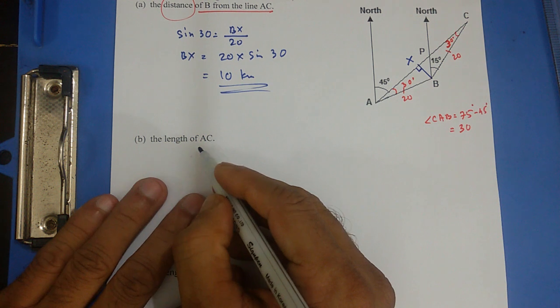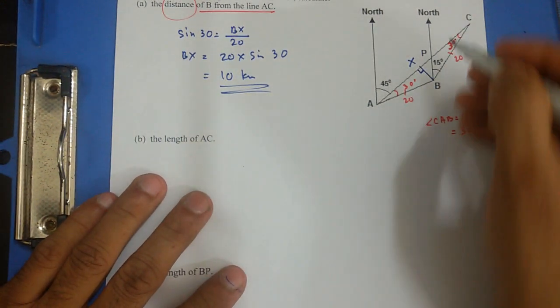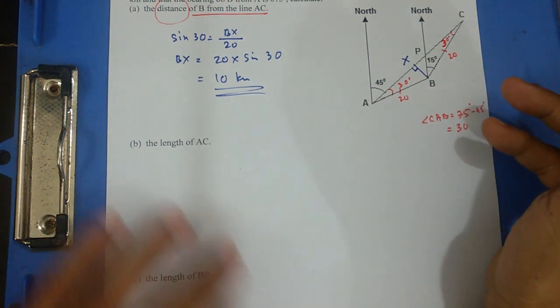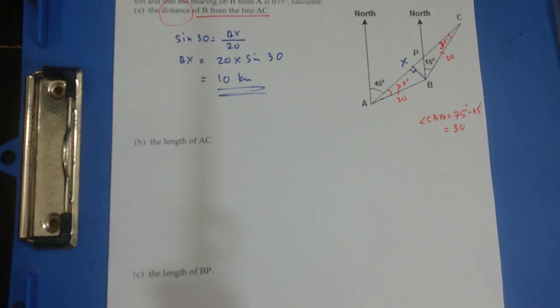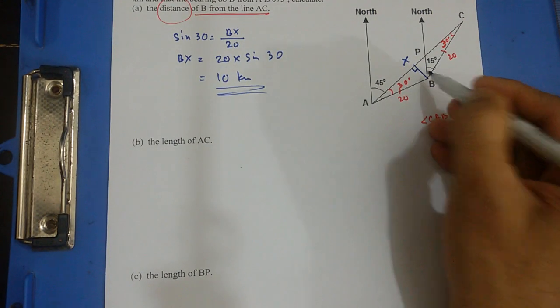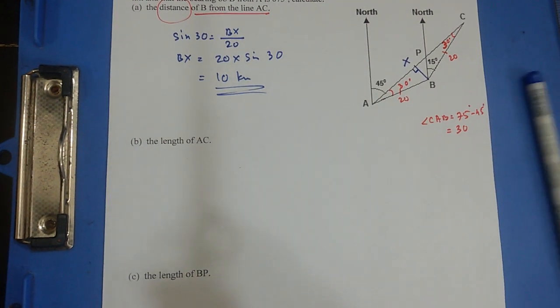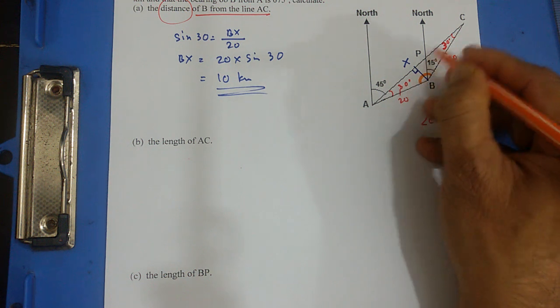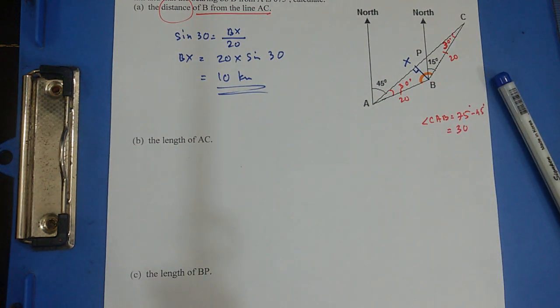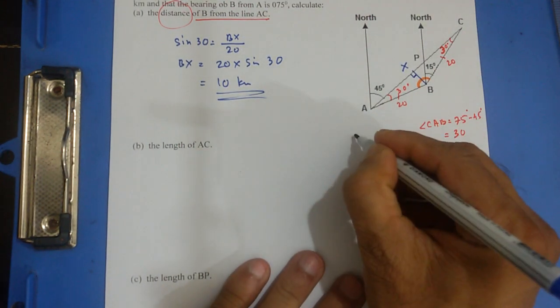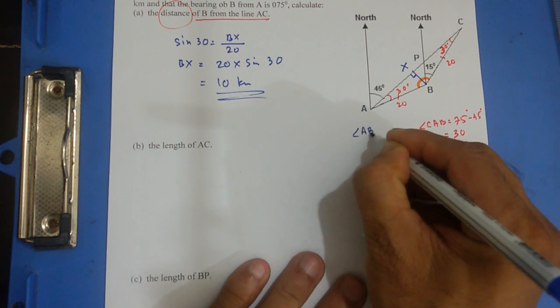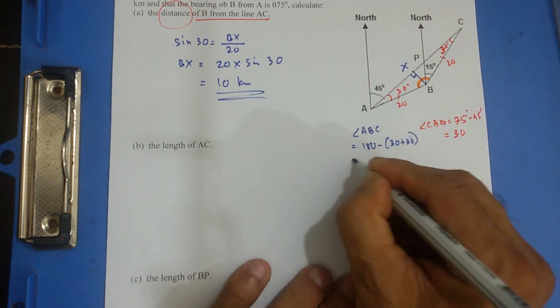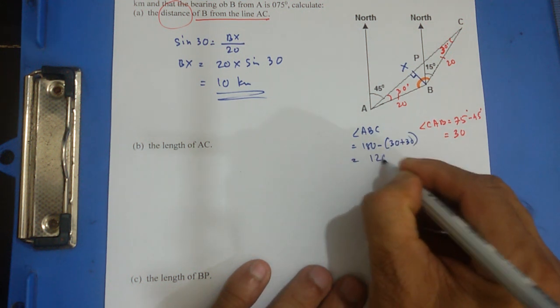Now, next one is the length of AC. Now I have this, I have that. What else do I have? Now I can easily get this angle B over here, the whole angle. Because I know this is 30, this is 30. So this angle is supposed to be, angle ABC is going to be 180 minus 30 plus 30, and that's going to be 180 minus 60, 120.